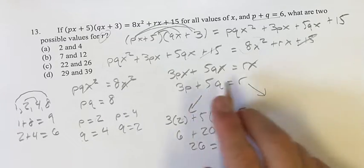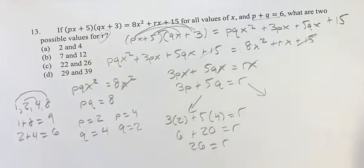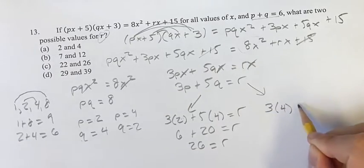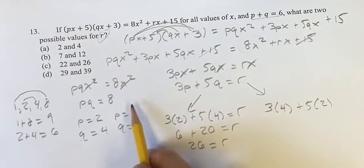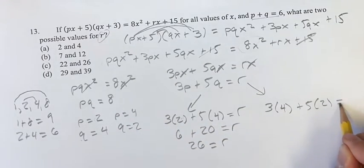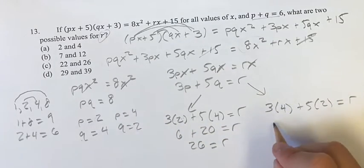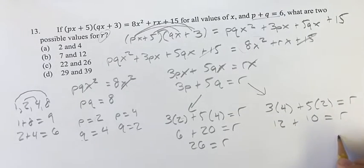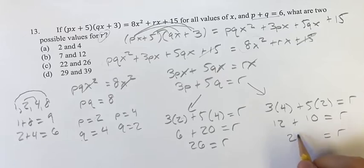So in this situation, 3 times 4 plus 5 times 2, since we're plugging in 4 for p and 2 for q, that's going to be equal to r. 3 times 4 is 12, plus 5 times 2 is 10, equal to r. r is equal to 12 plus 10 is 22.